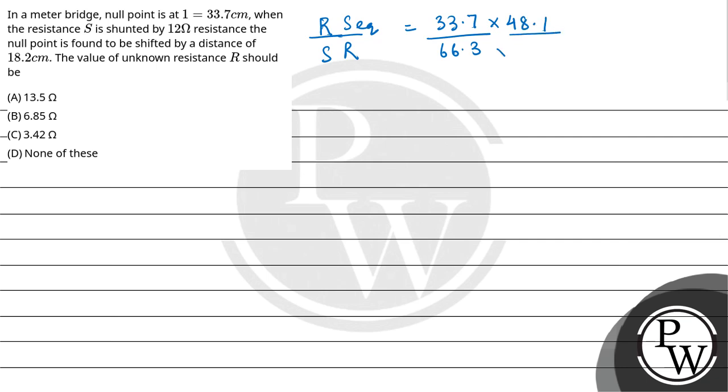So from here, R will get cancelled. S equivalent's value becomes 0.47 into S. S equivalent's value is 12S upon 12 plus S equals 0.47S. S will get cancelled. So 12 equals 0.47 into 12 plus S.